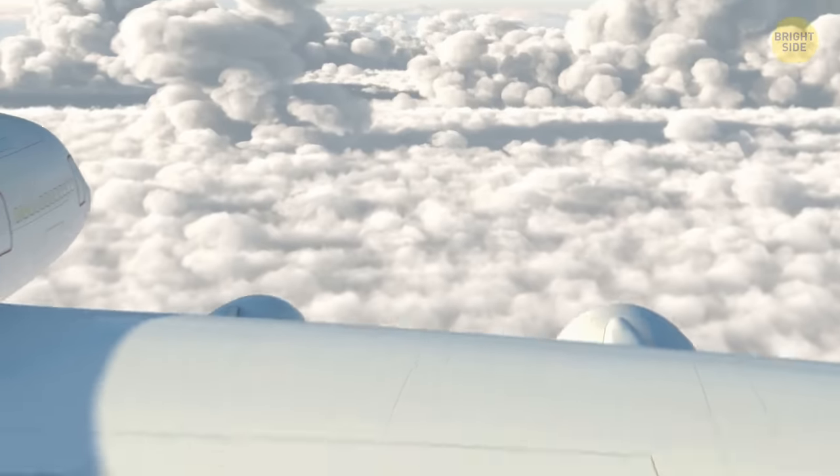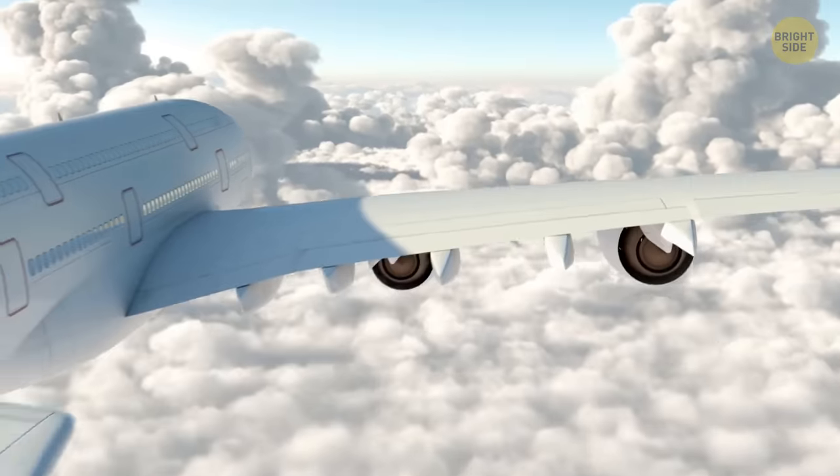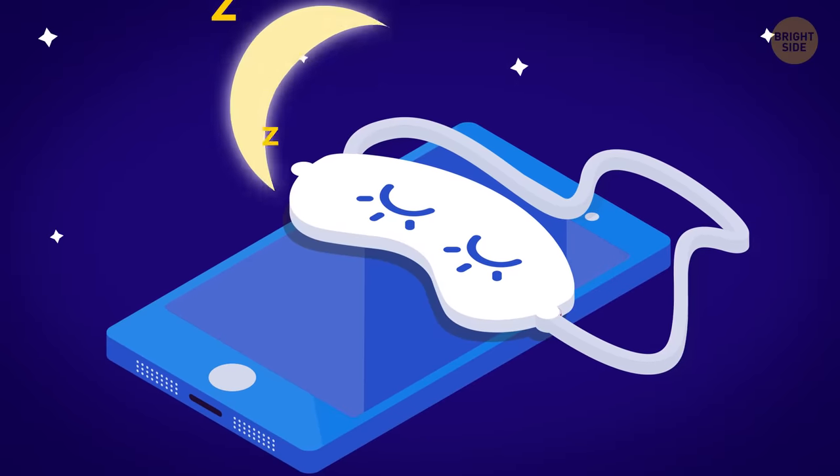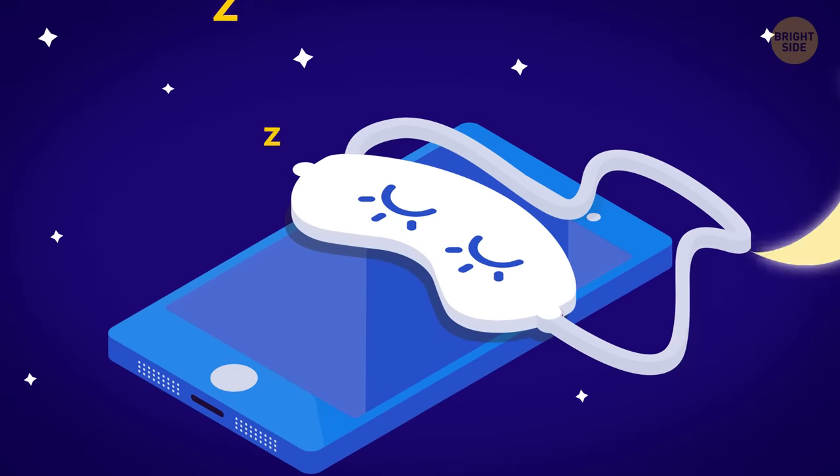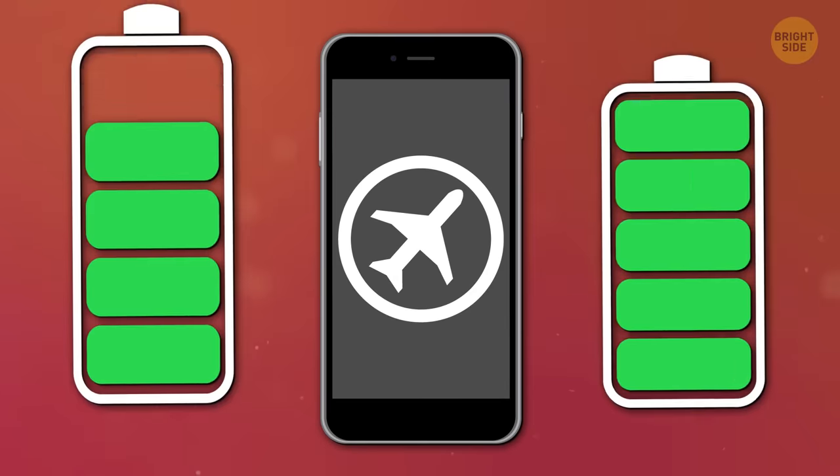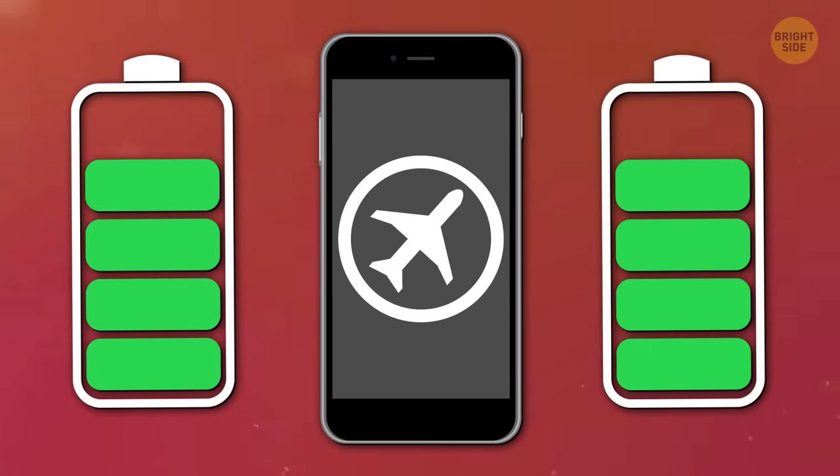Instead, turn on airplane mode before putting your phone to sleep. Your phone is still interacting with the network even when asleep. Switching on airplane mode can reduce power consumption by up to two-thirds.